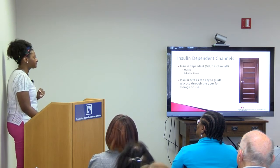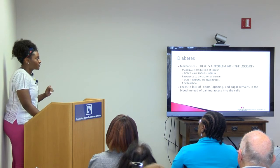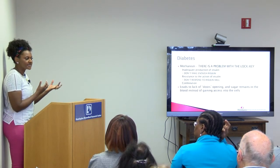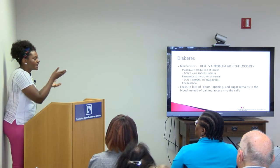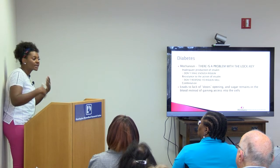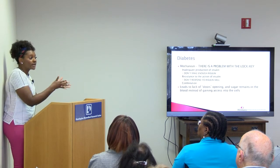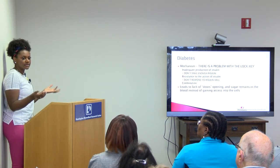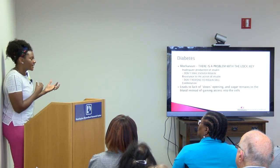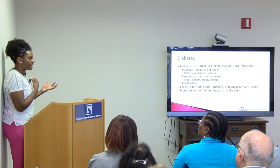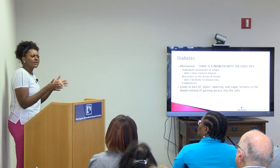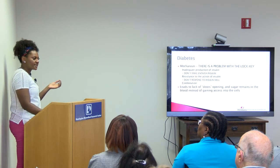In diabetes, there's a problem with the lock and key system. Even though your key is for the lock, for some reason your key just doesn't work as well. So your body makes more keys to hopefully allow one of them to open the door. That's where insulin resistance comes from — that's where your type 2 diabetes comes from. It's not that you don't have the keys; it's just that they're not really working well when they get to the door.